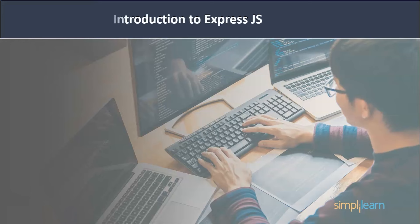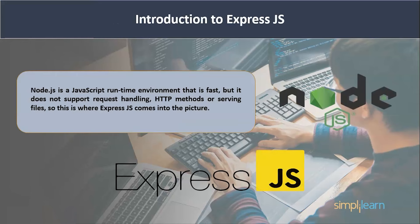Node.js is a fast JavaScript runtime environment, but it does not support request handling functions, HTTP methods, or serving files. So ExpressJS comes into the picture. Express makes Node.js code easier, as it provides a wide range of features to develop both web and mobile applications. It is used to build single page, multi-page, and hybrid web applications. As Express is written in JavaScript, it is very easy to understand for developers who know JavaScript.